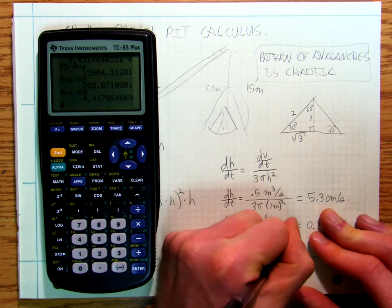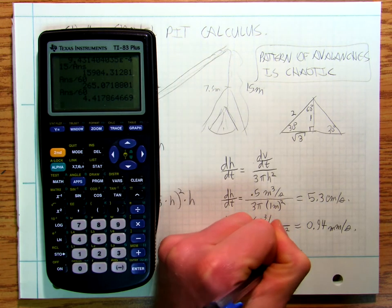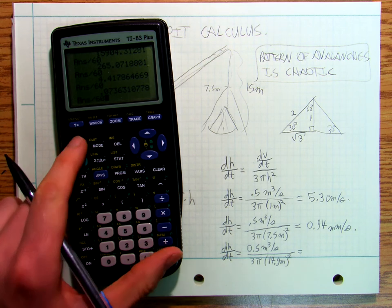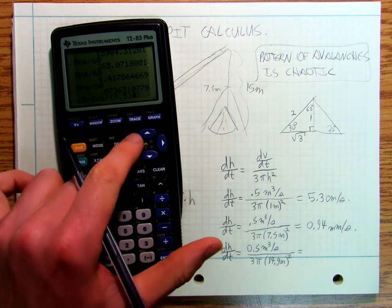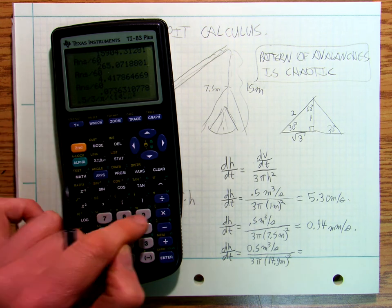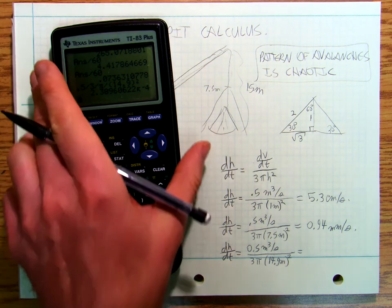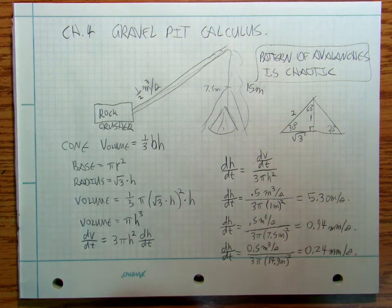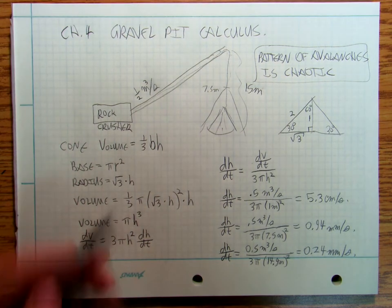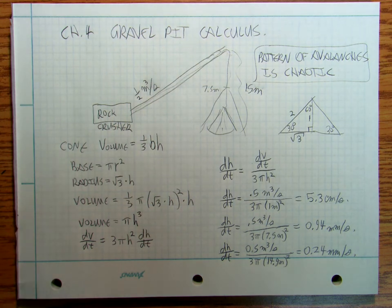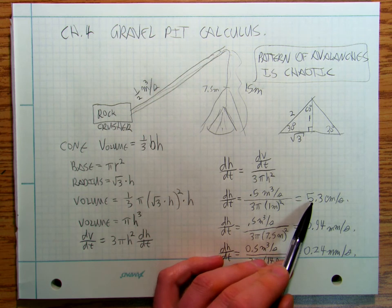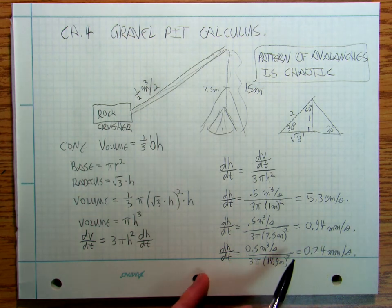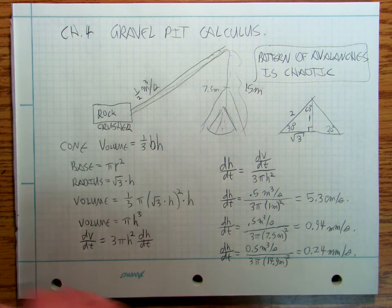Let's go 14.9 meters. And now it's growing at 0.24 millimeters per second. So you start off and you're all excited. Just like when you're starting to watch this video, you're all excited and now you're kind of bored. Right? So it starts off at 5.3 centimeters per second. That pile is just cruising up. Then it slows down to 0.94 millimeters per second. And then when you're really bored, it's just creeping up at 0.24 millimeters per second.